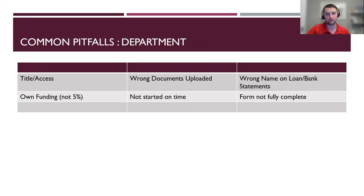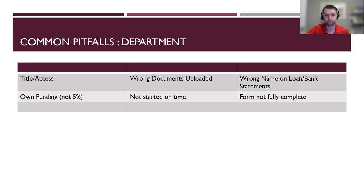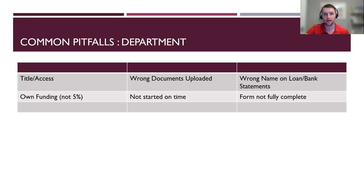If you're doing something in partnership with a school, third-level institution, or education and training board, you'll also need a license agreement between the groups covering what happens if the land is sold. Common pitfalls include not knowing whether you actually own your land — something that can take a long time to figure out. Other pitfalls are realizing the project is more expensive than expected and not having that 5% funding, uploading wrong documents or documents with mismatched names, incomplete forms, and projects that don't start on time.